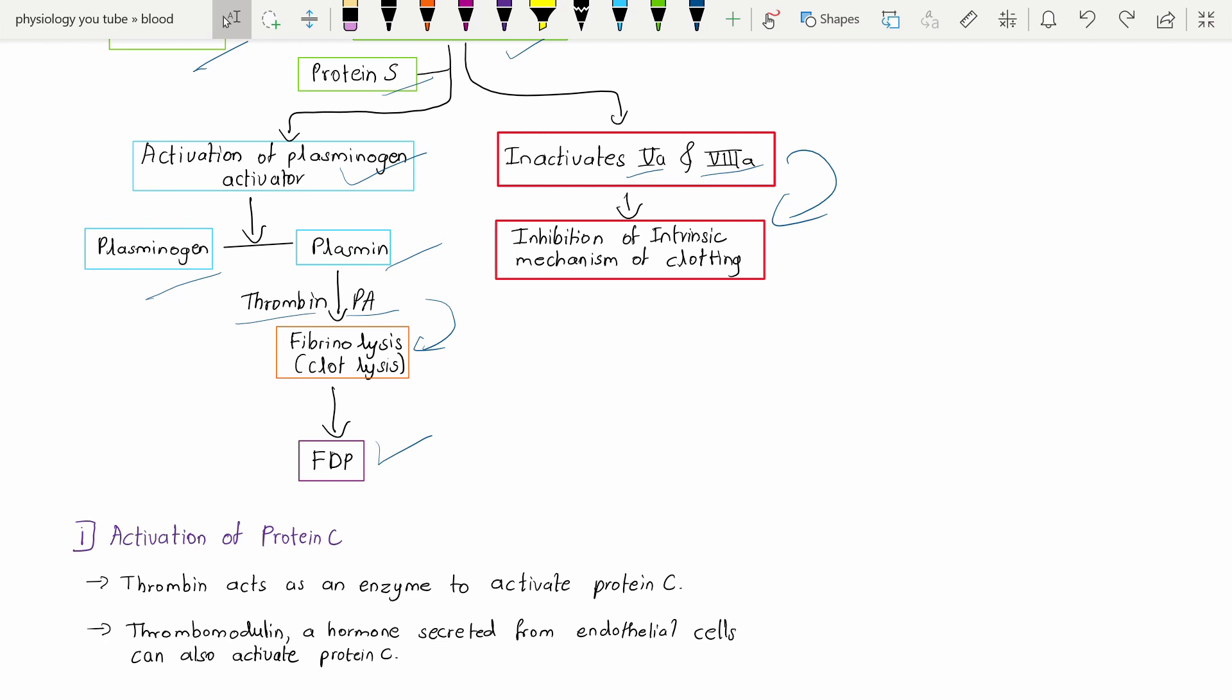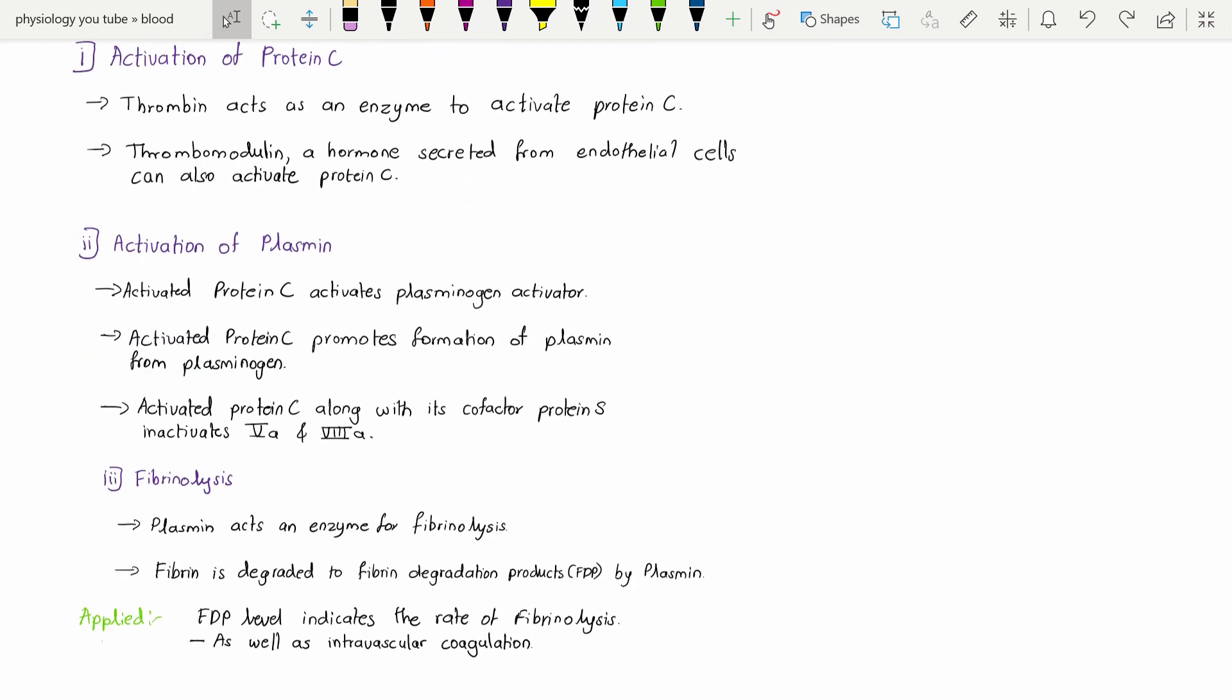Now I am going to summarize these three steps. The first step, activation of the protein C: here the thrombin acts as an enzyme to activate the protein C, and the thrombomodulin, a hormone secreted from the endothelial cells, can also activate the protein C.